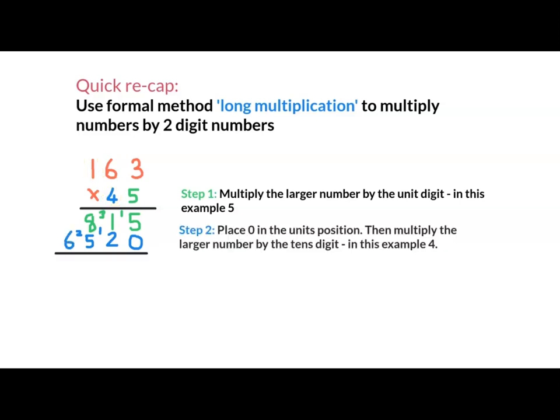We can see in this example, 163 multiplied by 40 gives us an answer of 6520. Remember step 2, place the 0 in the unit's position, then multiply the larger number by the 10's digit. In this example, it was 4.